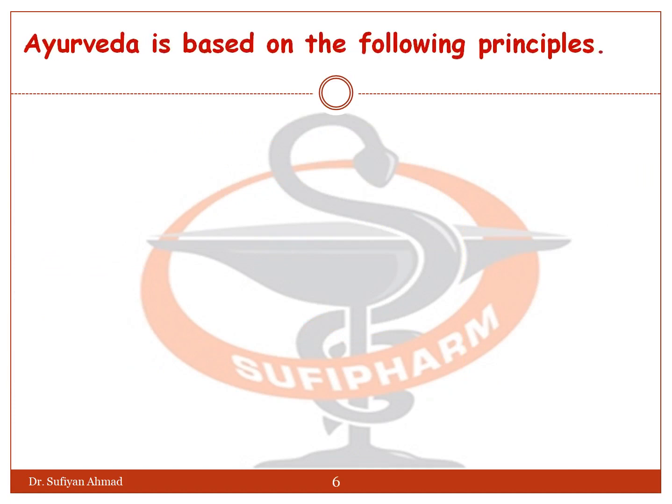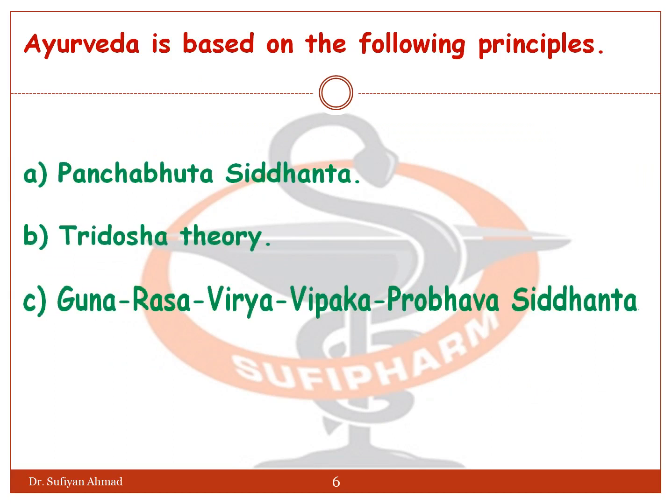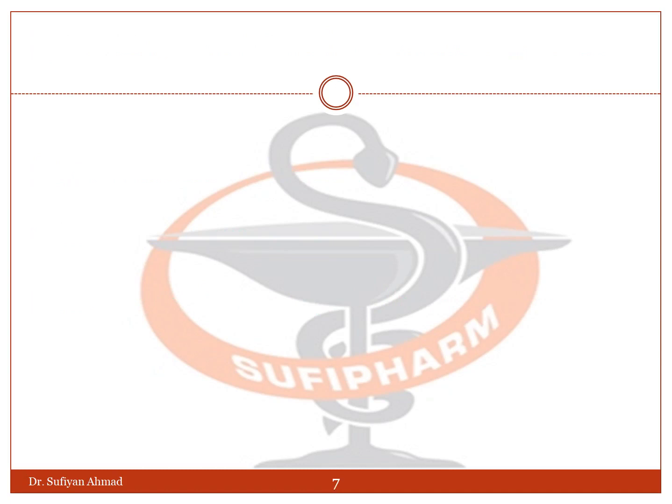Ayurveda is based on the following principles: Pancha Mahabhuta Siddhanta, Tridosha theory, and Guna, Rasa, Virya, Vipaka, Prabhava Siddhanta.